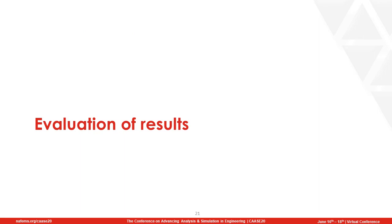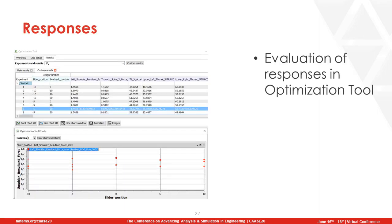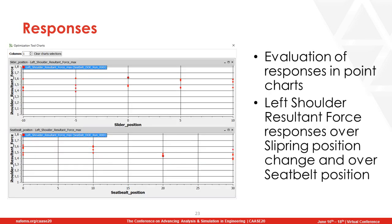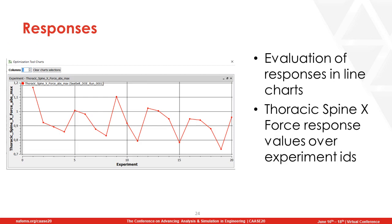After running all the experiments in LS-Dyna, it is time to evaluate the results. The responses can be evaluated in the same environment — the optimization tool of ANZA — which shows a list of all experiments with their design variables and corresponding responses. The responses can be evaluated in point charts, for example the left shoulder resultant forces over slip ring position and seatbelt position, or in line charts showing how the thoracic spine X-force changes over the experiment IDs.